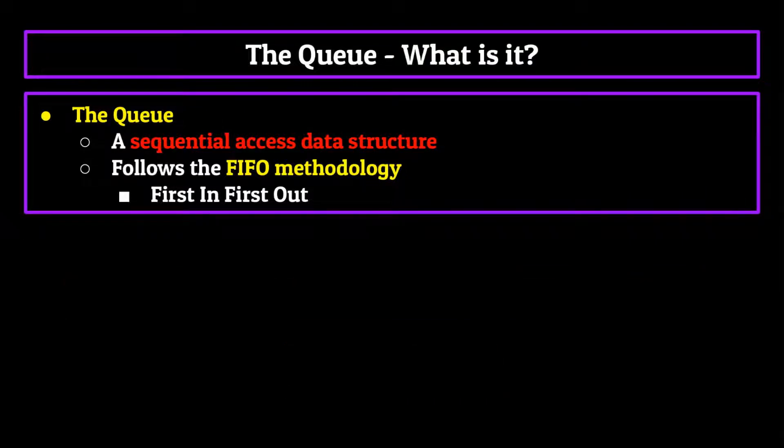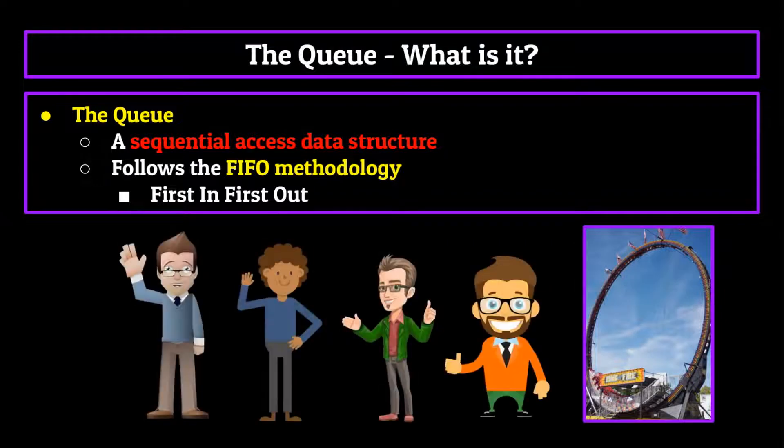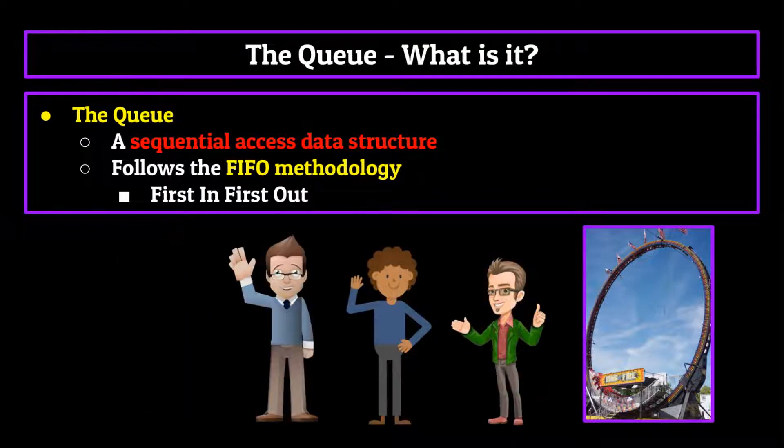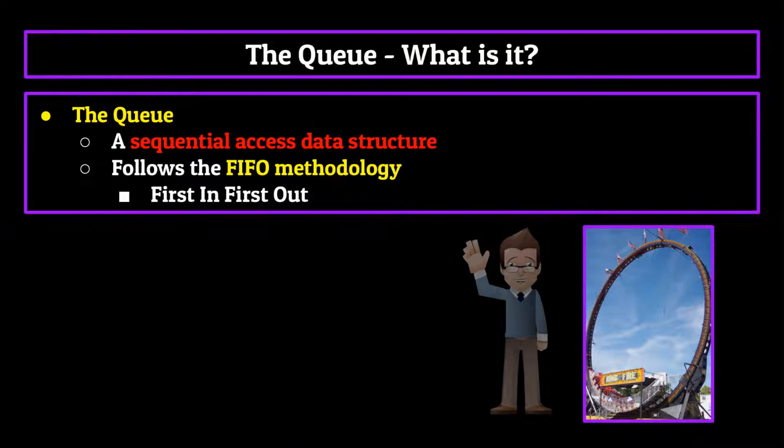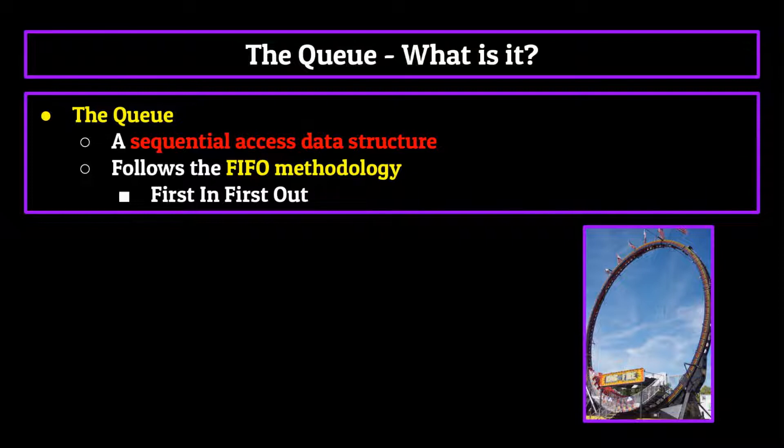We can think of this as a line to your favorite amusement park ride. The first person to get there, assuming we don't have any cutters, will always be the first one who gets to go on the ride. The later you show up, the longer you'll have to wait to get onto the ride. This is the strategy used for queues when adding and removing elements. The first element to be added will also be the first one to be removed.